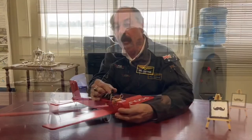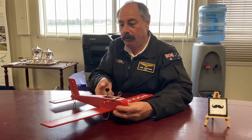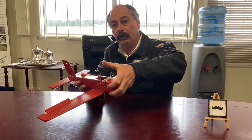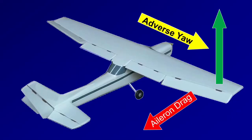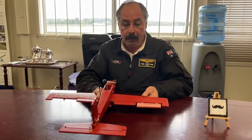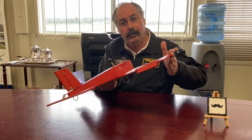Today on Ask Uncle Phil, I have a question from Zach Bray. Zach asks how do airplane manufacturers minimize aileron drag? These control surfaces are known as ailerons and they produce roll around the longitudinal axis of the airplane. The down-going aileron produces more lift and in consequence more drag than the up-going aileron, producing a yaw opposite the direction of the desired turn.